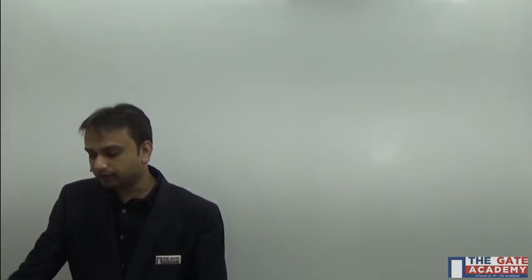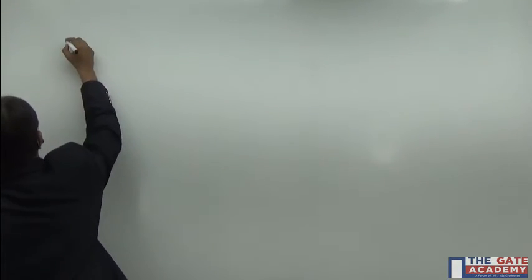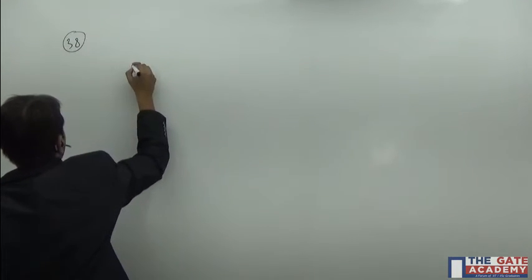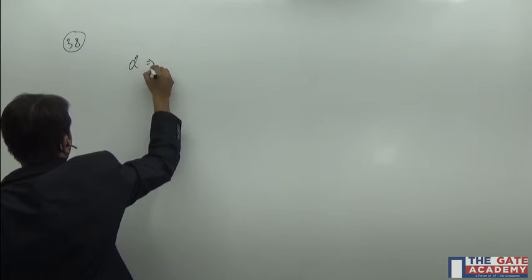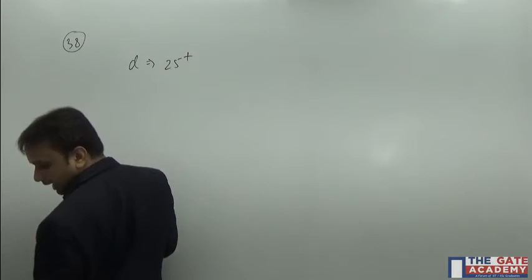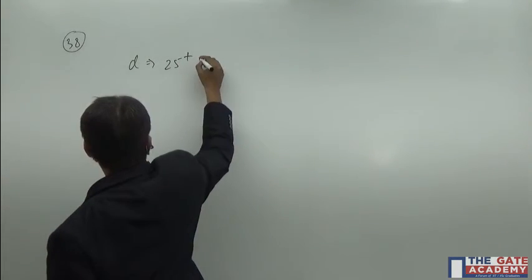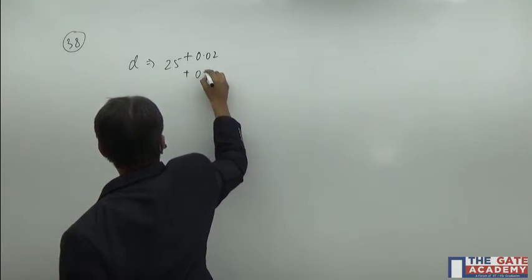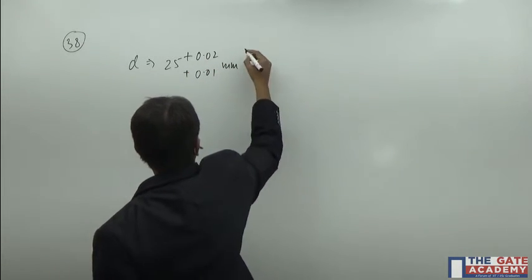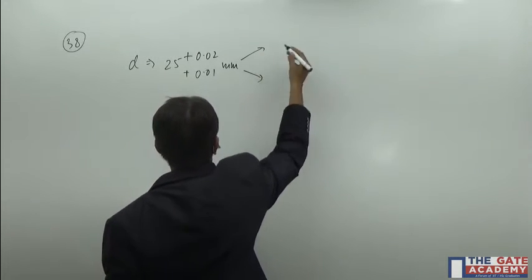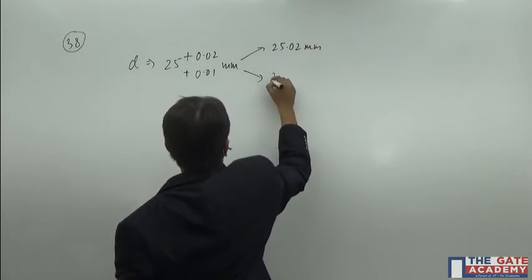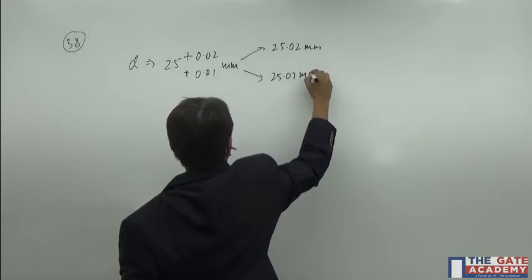It says a cylindrical pin of 25 diameter, and this is 38. The diameter of cylindrical pin is given by 25 plus 0.02 and plus 0.01 mm. So what I can see is it is making two dimensions, which is 25.02 mm and 25.01 mm.